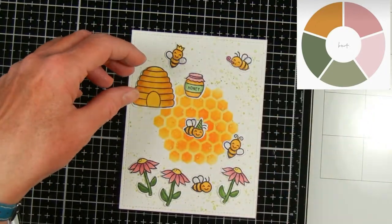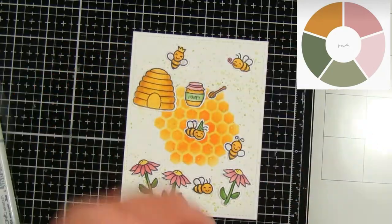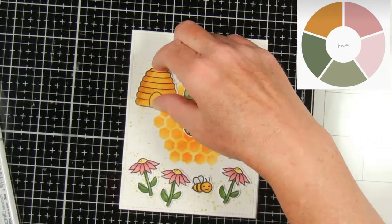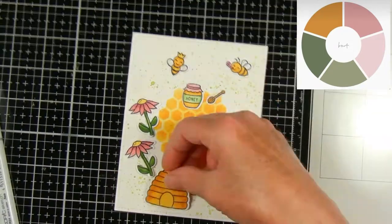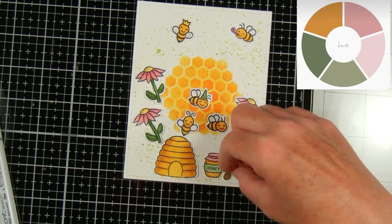Then I just started arranging them. Originally I was going to do this as a landscape card but when I stamped the inside I forgot and stamped portrait. So now I'm trying to figure out how I want everything to go.